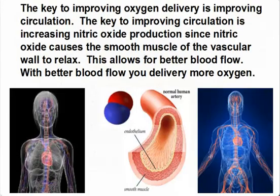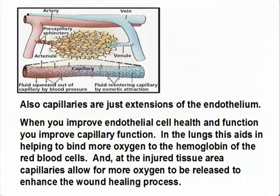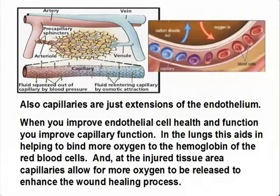The key to improving oxygen delivery is improving circulation. The key to improving circulation is increasing nitric oxide production, since nitric oxide causes the smooth muscle of the vascular wall to relax. This allows for better blood flow. With better blood flow, you deliver more oxygen. Capillaries are just extensions of the endothelium. When you improve endothelial cell health and function, you improve capillary function. In the lungs, this aids in helping to bind more oxygen to the hemoglobin of the red blood cells, and at the injured tissue area, capillaries allow for more oxygen to be released to enhance the wound healing process.